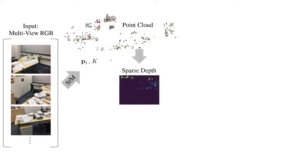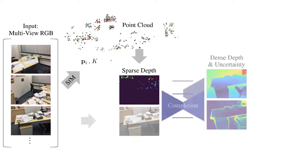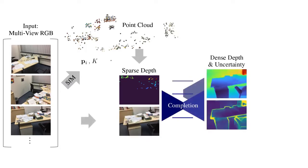However, using sparse depth alone does not sufficiently constrain the radiance field. Hence, we learn dense depth priors in the form of a network that completes sparse depth and estimates uncertainty. We use this dense depth and uncertainty to supervise NeRF and guide the sampling along rays.